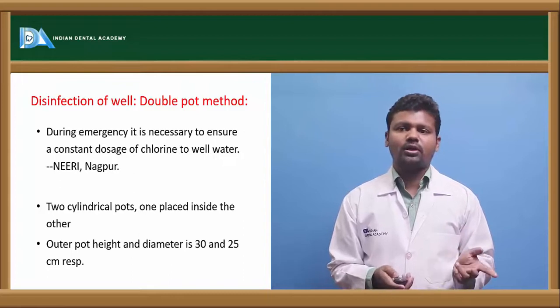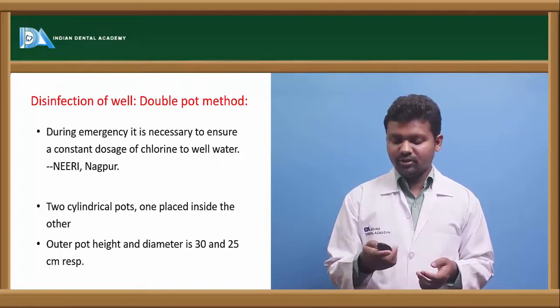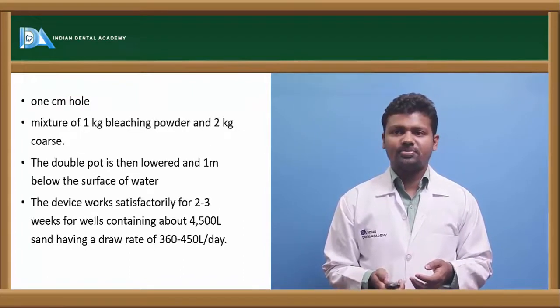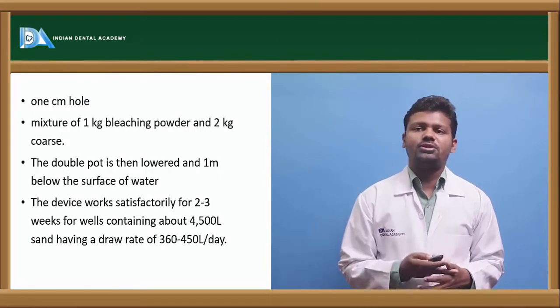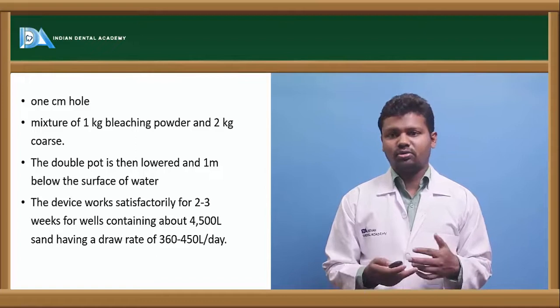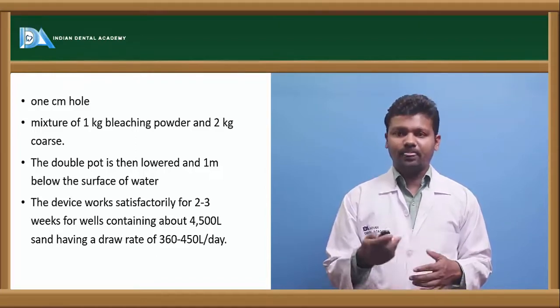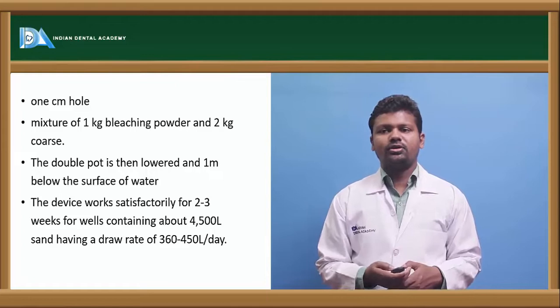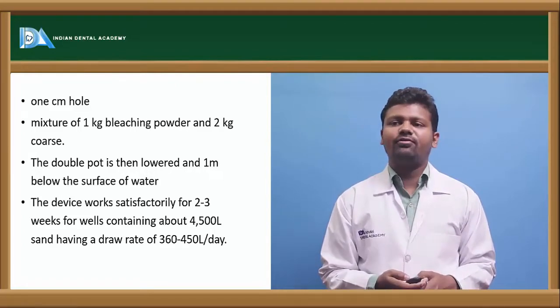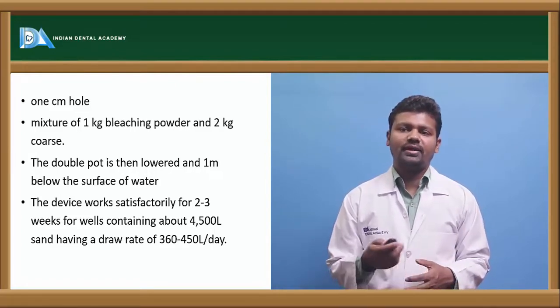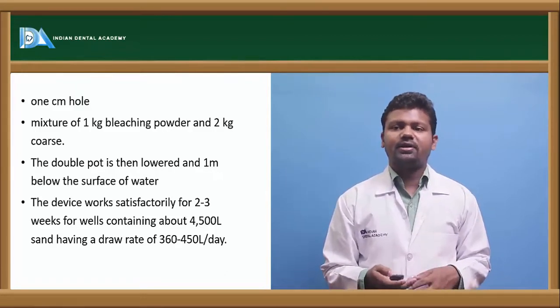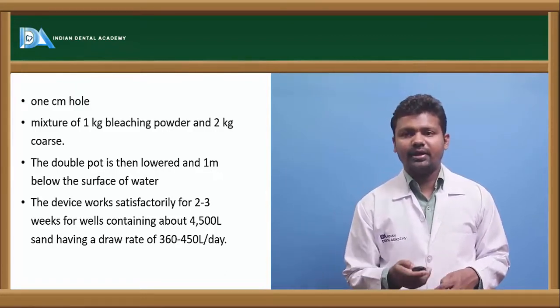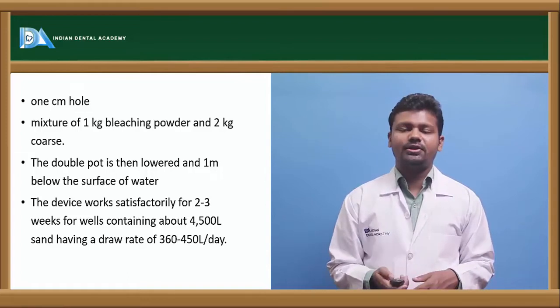The outer pot height should be around 30 to 35 cm respectively. One cm hole is made. The mixture of 1 kg of bleaching powder and 2 kg coarse. Double pot is then lowered 1 meter below the surface of water. The device works satisfactorily for 2 to 3 weeks for wells containing about 4,500 liters and having a draw rate of 360 to 450 liters per day.